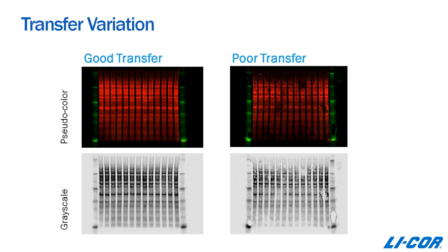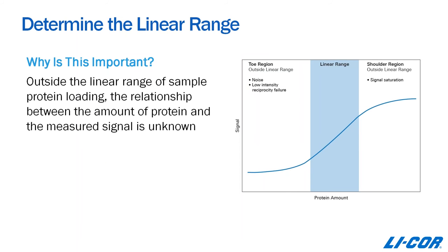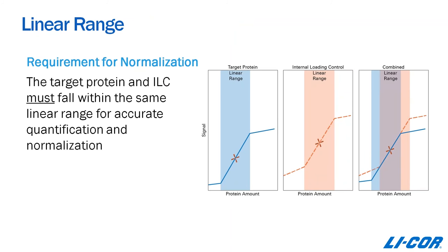One of the things that's absolutely critical to doing quantitative analysis is making sure that you're detecting both your target and your internal reference control in the linear range. Outside the linear range of sample protein loading, the relationship between the amount of protein and the measured signal is unknown. So a prerequisite for any type of quantitative analysis is making sure that you're detecting your target in the linear range, and working within that linear range is a requirement for normalization.